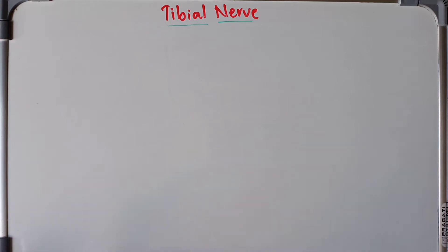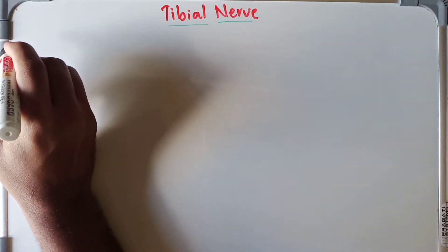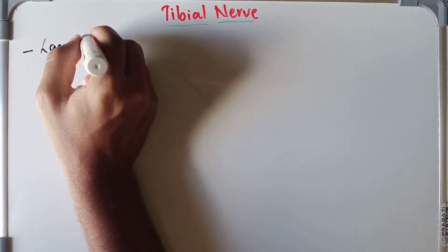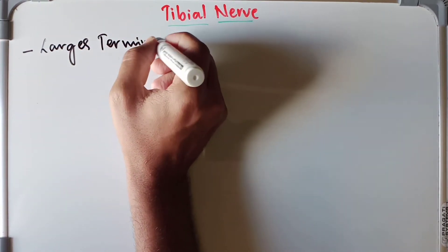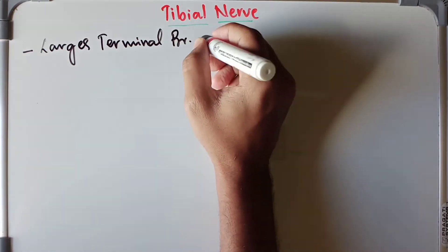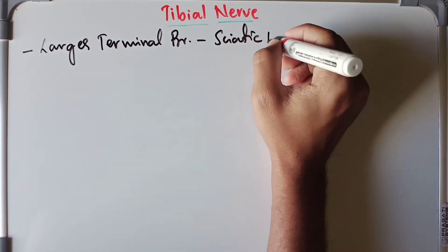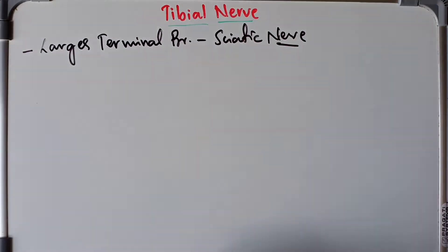Hey guys, what's up, welcome back. In this video we are going to discuss the anatomy of the tibial nerve. The tibial nerve is the larger terminal branch of the sciatic nerve. The other smaller terminal branch is the common peroneal nerve — we have a separate video on that, make sure to watch it.